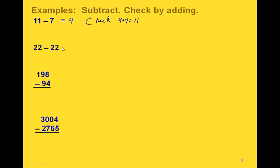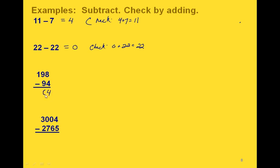If we add 4 and 7, we get 11. For this next one, we're using one of the subtraction properties of 0 — if you subtract a number from itself, you get 0. So 22 minus 22 would equal 0. This next one is already written out in column form. We're going to subtract 4 from 8 and get 4. Then in the tens column, 9 minus 9 is 0. And in the hundreds column, 1 minus 0 equals 1. So the answer we got was 104.